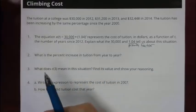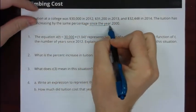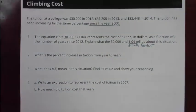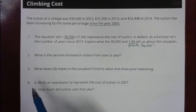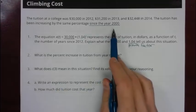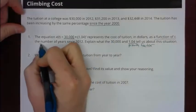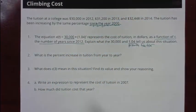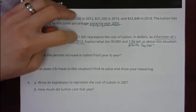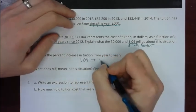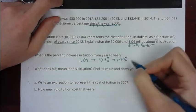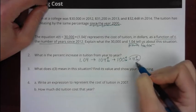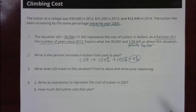And the t is representing how many years it's been since 2012. As far as percent increase in tuition from year to year, that's where the 1.04 comes into play. 1.04 as a percentage would be 104%. You can break that into 100% plus 4%. So that's how we know that the plus 4% is how much the percentage increase is going to be in this particular scenario.